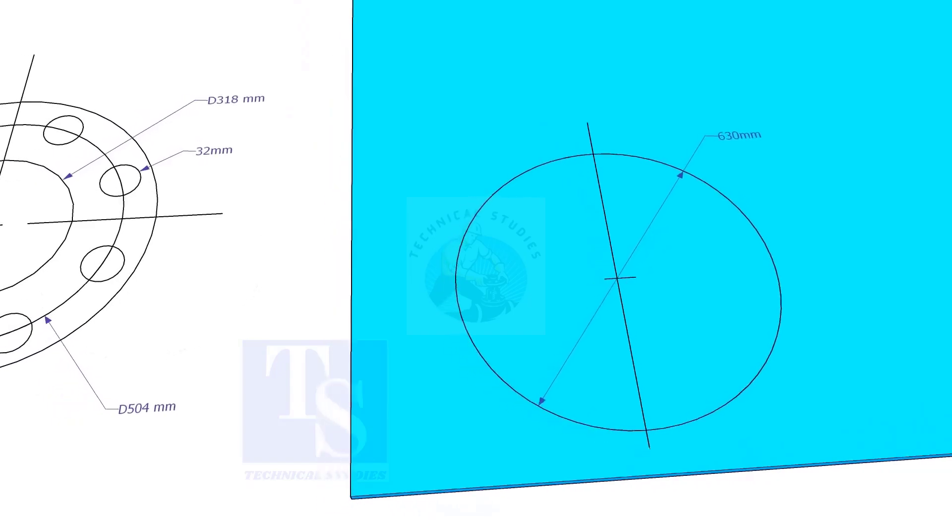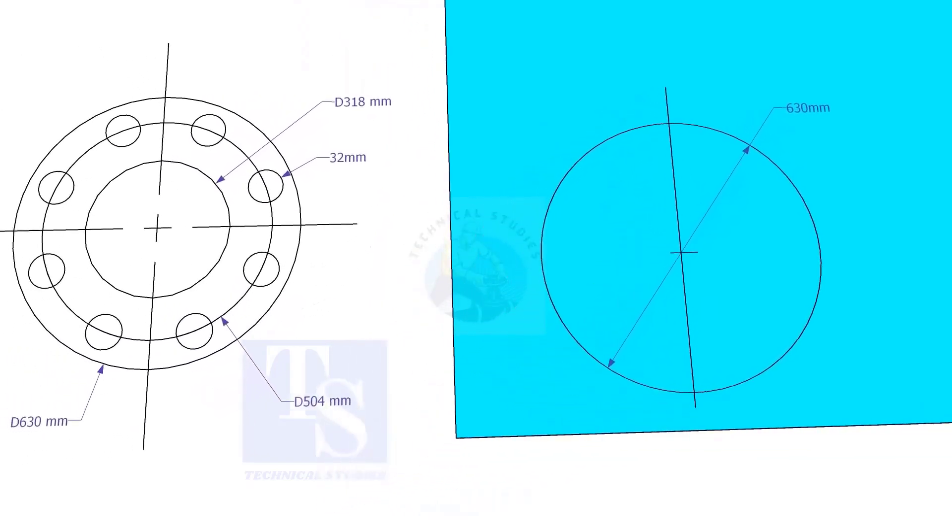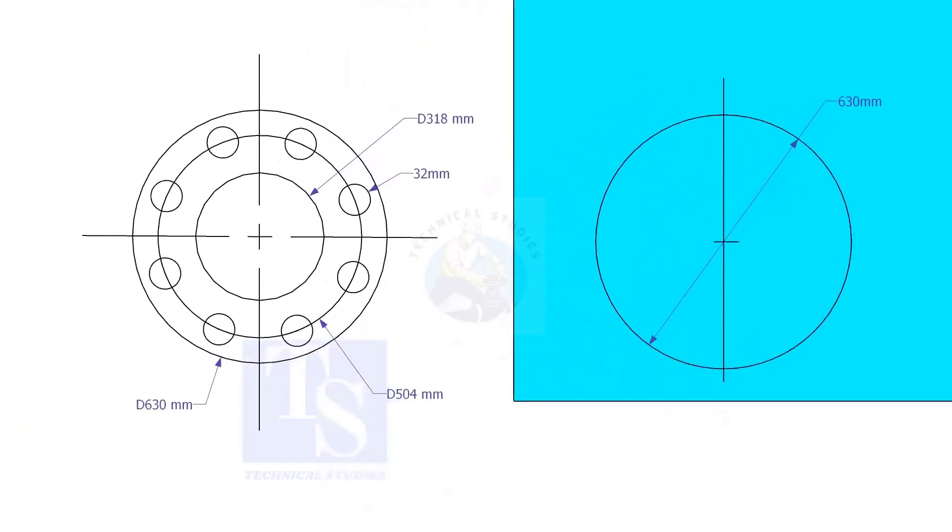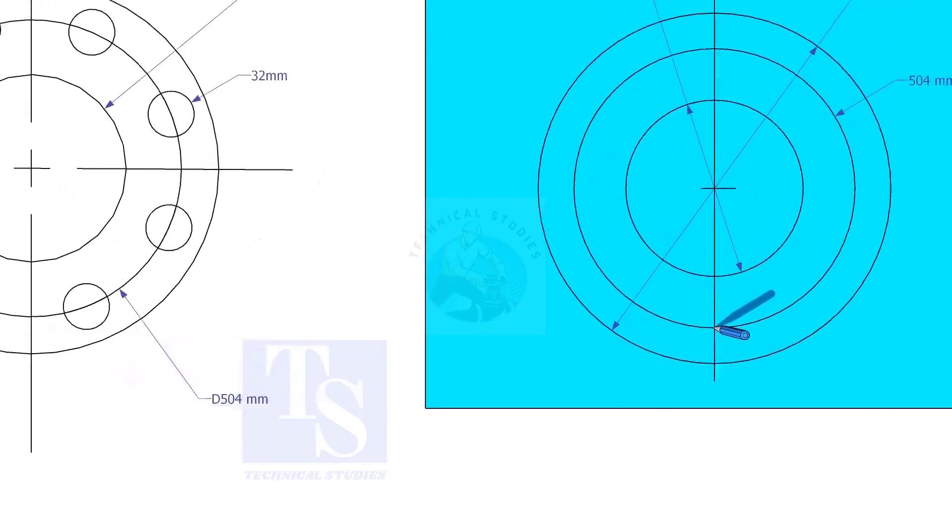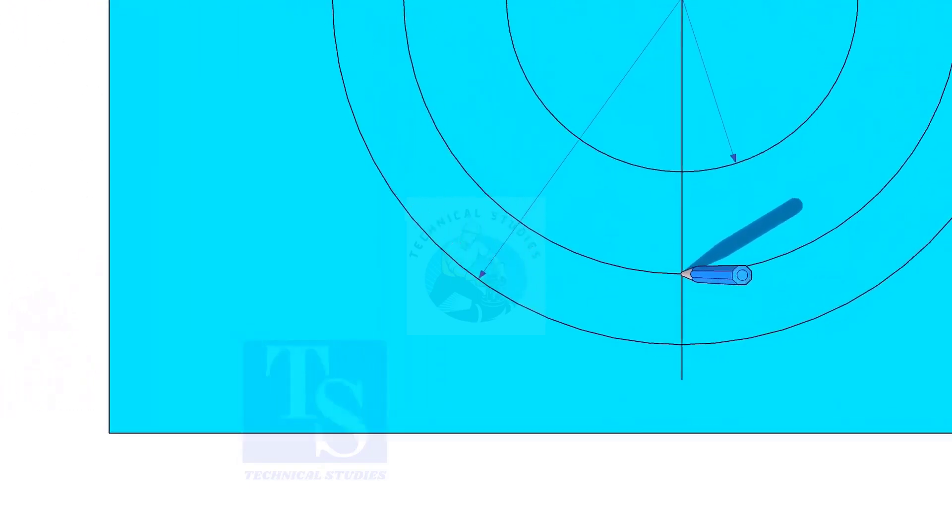Draw the OD and the ID circles. Draw the PCD. Punch mark where the PCD circle cuts the center line.